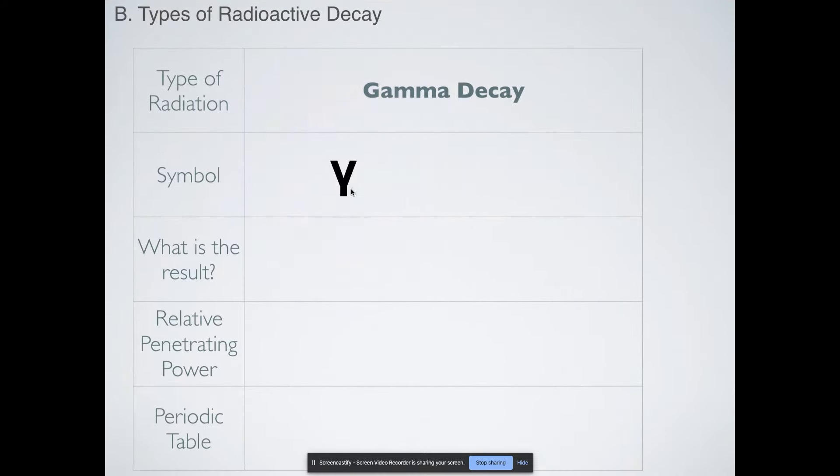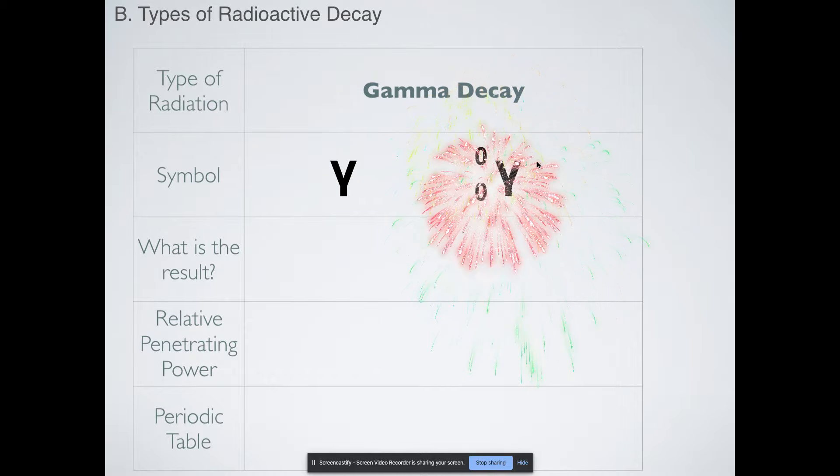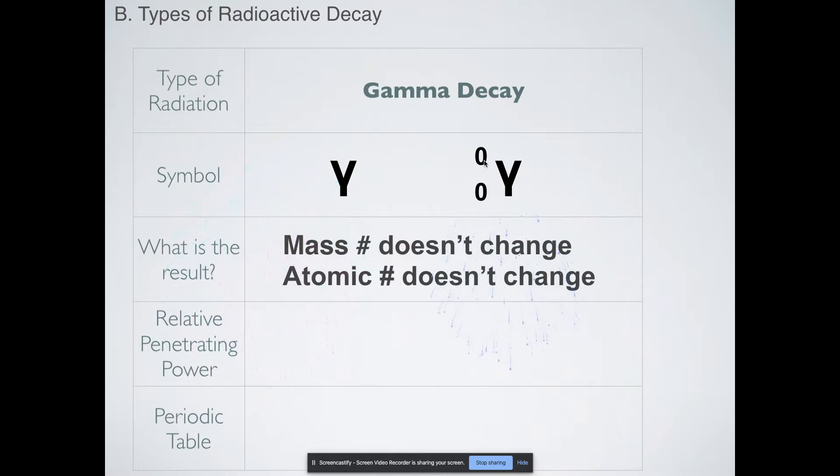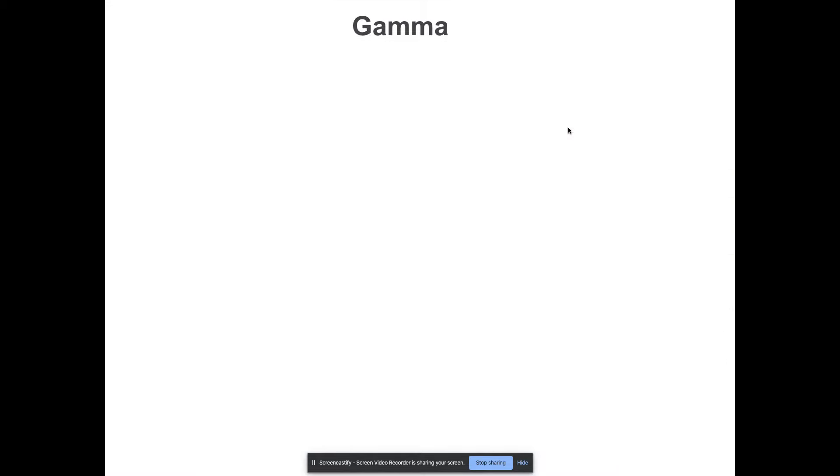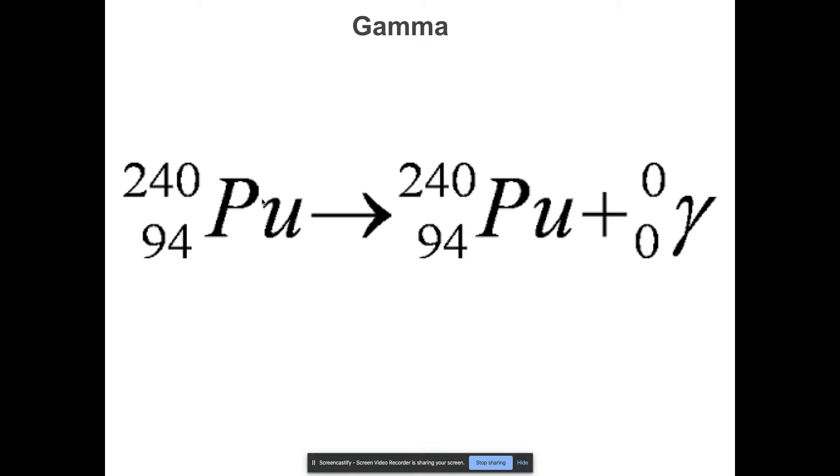Okay, gamma decay, the last type we're going to talk about. So the symbol can be a gamma symbol like this, where sometimes you'll see a gamma symbol that's written with a mass number of zero and an atomic number of zero. What is the result? Mass number doesn't change. Atomic number doesn't change. But this is the most dangerous form of radiation, and it can only be stopped by thick layers of concrete and lead. On the periodic table, nothing changes when you do gamma decay. It's literally just more of like a warning letting you know that some dangerous byproduct is being made. Here's an example of gamma radiation. You've got plutonium-240, and it is still plutonium-240 on the opposite side, but it is emitting lots of gamma radiation.